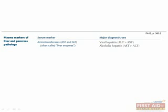AST elevations are also seen in myocardial infarctions. The way to remember that alcoholic hepatitis has a higher AST than ALT is with the mnemonic 'toasted,' meaning drunk, which has AST in it. While these rules are generally true, there can be instances in which they're not.